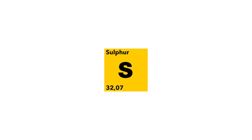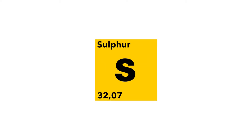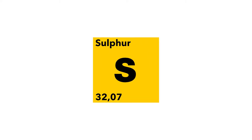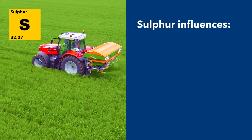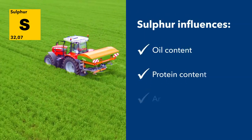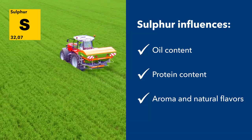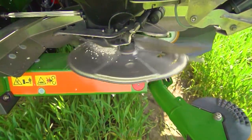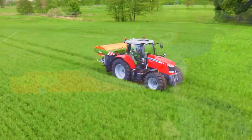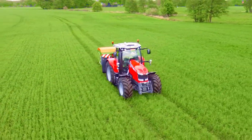In plant nutrition, sulfur is one of the essential micronutrients. For a balanced application of plant nutrients, it is necessary to ensure that the soil is supplied with a sufficient quantity of sulfur. In the plant, sulfur has a positive impact on the oil and protein content as well as on natural flavors. Sulfur is needed for a good nitrogen conversion in the plant and helps to promote a high yield.